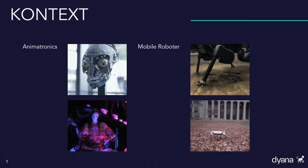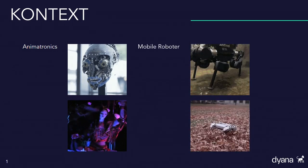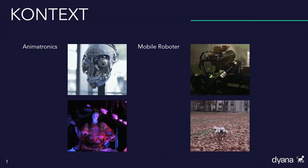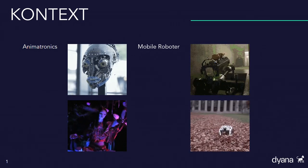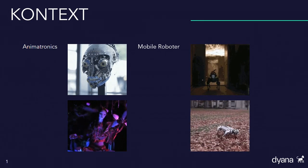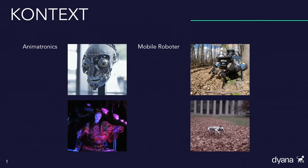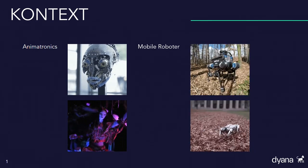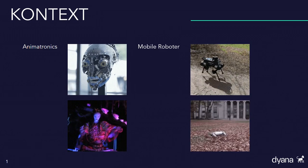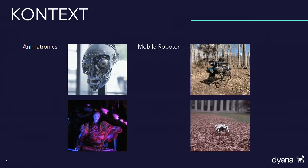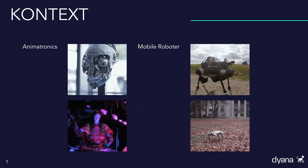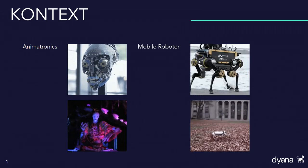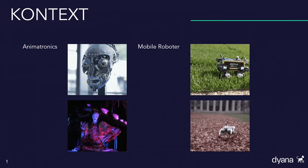Werfen wir einen Blick in die Welt der Robotik, sehen wir hauptsächlich Roboter, die für die Erfüllung einer spezifischen Aufgabe ausgelegt wurden. Ein konkretes Beispiel sind mobile Roboter, die vierbeinig in der Lage sind, autonom durch schwieriges Terrain zu navigieren. Dank Sensoren können sie ihre Umwelt wahrnehmen, damit interagieren und Daten darüber sammeln. Ein bekanntes Einsatzgebiet ist daher die Überwachung von gefährlichen Anlagen. Allerdings sind diese Roboter eher ein Forschungsgebiet und werden noch nicht großflächig eingesetzt.